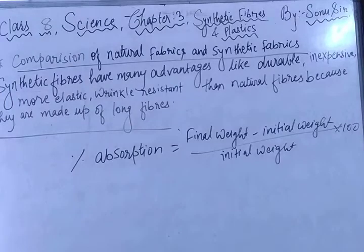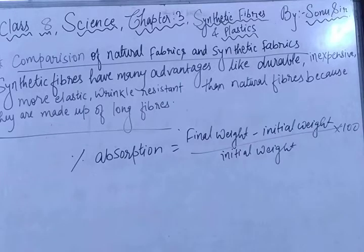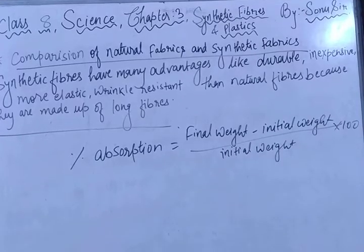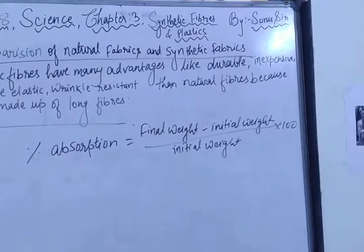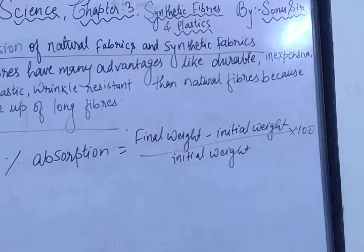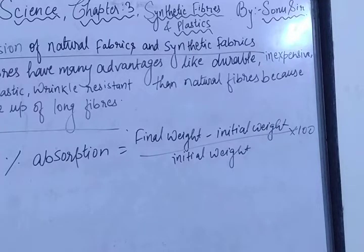So this is the percentage absorption formula. Take the sample, record the initial weight, after absorbing water record the final weight, then calculate the percentage of absorption: final weight minus initial weight, divided by initial weight, multiplied by 100. After completing the water absorption experiment for all fabrics, move to reaction on heating: place each sample in a china dish and heat it over a flame. Observe which fabric melts and which burns. Then for effect of flame, bring each sample near a flame using tongs and observe which fabric catches fire, the nature of the flame, the smell produced, and the combustion products.